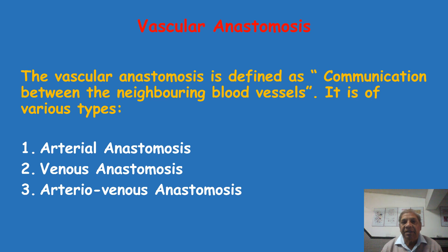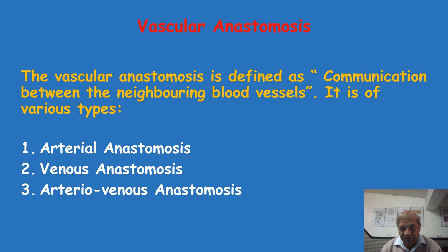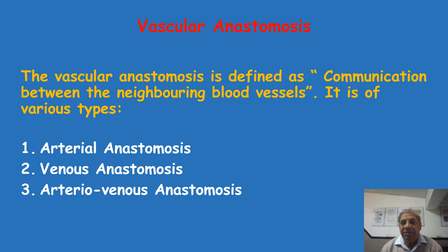Vascular anastomosis is defined as communication between neighboring blood vessels. It is a communication or junction of one vessel with another vessel running close to it or in its neighborhood. This kind of communication between blood vessels is of three kinds.